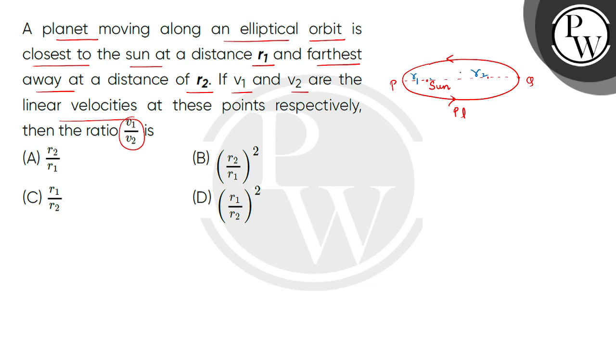Now, at the closest position, the velocity magnitude, and at Q the velocity magnitude, so we find it.